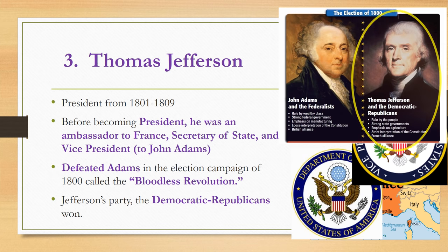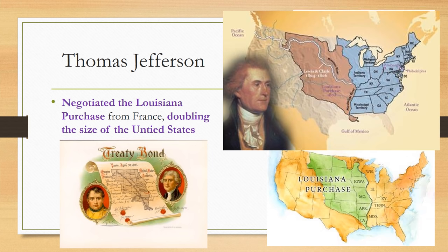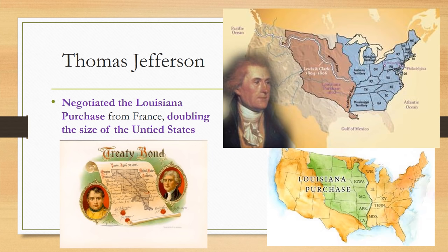Thomas Jefferson is famous for negotiating a deal with Napoleon as president. Jefferson saw the great lands that France had claimed out in the west, starting down south in the Louisiana area. Because of that it was named the Louisiana Purchase. He negotiated this deal, and it doubled the size of the United States, really encouraging expansion.